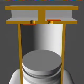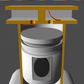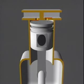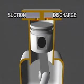Let's follow the compression process in a single cylinder reciprocating compressor during one complete revolution of the crankshaft. Starting with the piston at the top of its stroke, or at top dead center, the piston begins to move downward as the crankshaft rotates.